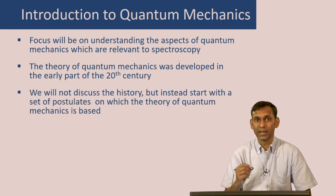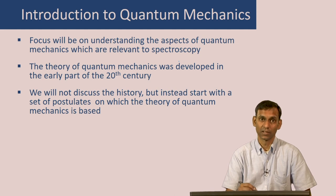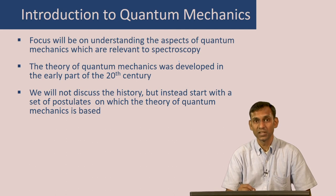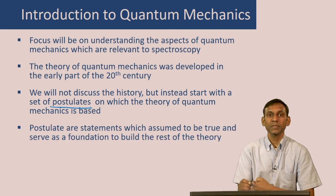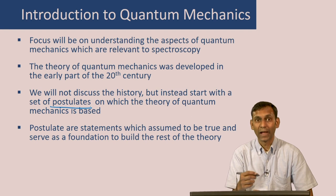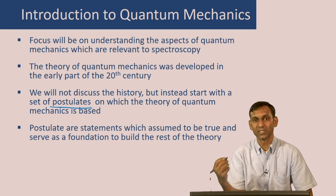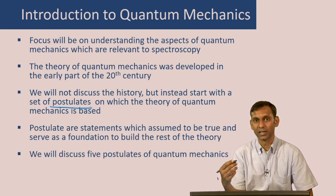However, in the interest of time, we will not discuss this history, but instead take a postulational approach to understand quantum mechanics — that is, we start with a set of postulates on which this theory is based. A postulate is a statement which we can assume to be true, and then use to build the rest of the theory. We will start with 5 such postulates and develop the theory of quantum mechanics based on those statements.